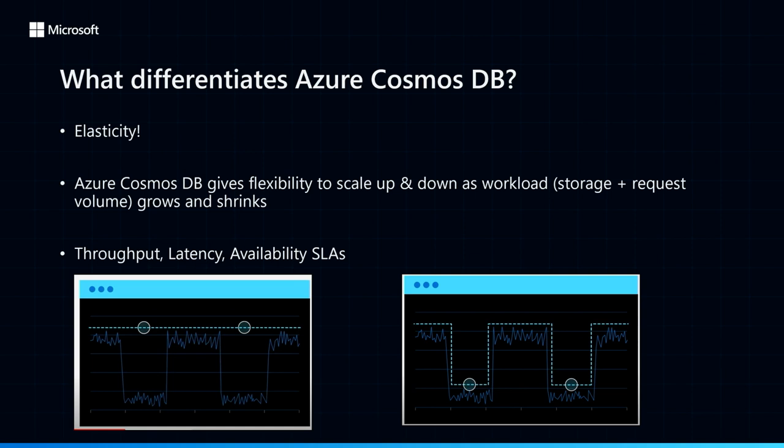Before diving into the strategies, I want to briefly talk about what elasticity gives us. Elasticity is about flexibility. Cosmos DB is a service that gives you the flexibility to scale up and down as the workload grows and shrinks, and most of the time this happens automatically without you even knowing. This all happens while we maintain throughput, latency, and availability SLAs. So now that we have this flexibility in mind, let's see how we can take advantage of it.